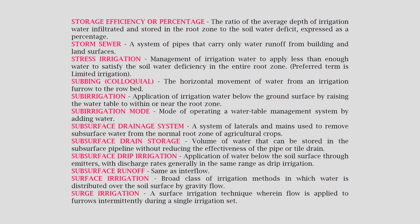Subsurface drainage system: a system of collaterals and mains used to remove subsurface water from the normal root zone of agricultural crops. Subsurface drain storage: volume of water that can be stored in the subsurface pipeline without reducing the effectiveness of the pipe or tile drain. Subsurface drip irrigation: application of water below the soil surface through emitters with discharge rates generally in the same range as drip irrigation.